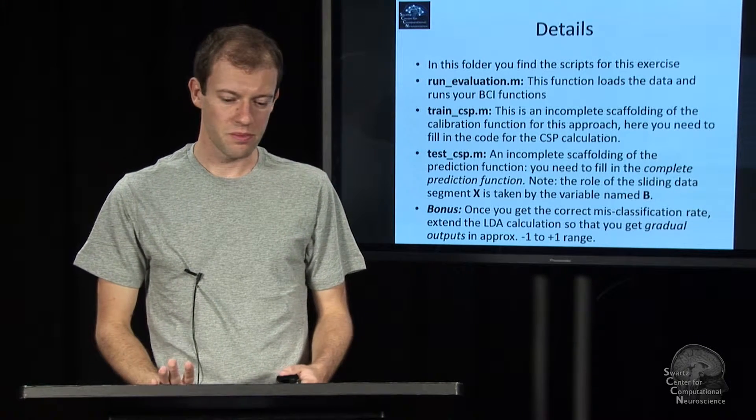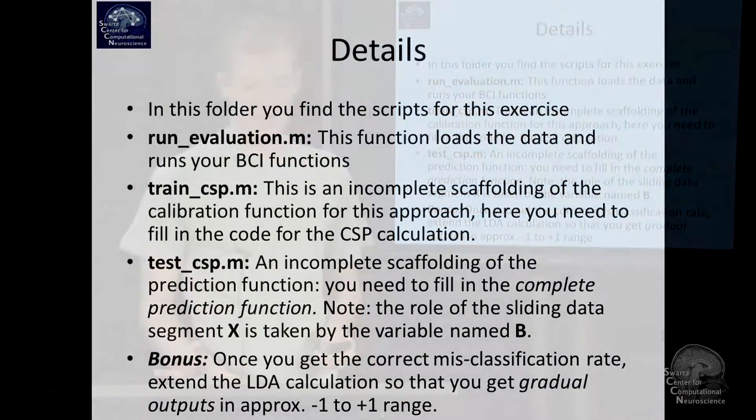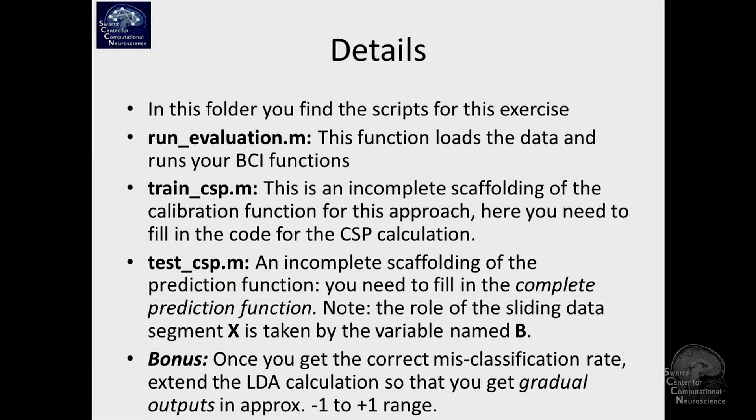you see it loads the data, it runs your BCI functions, and it basically does two things. It calculates a misclassification rate, and then it actually displays the output of your thing in a pseudo-online manner. So it shows in real time the output of the BCI as a curve that you calculate.